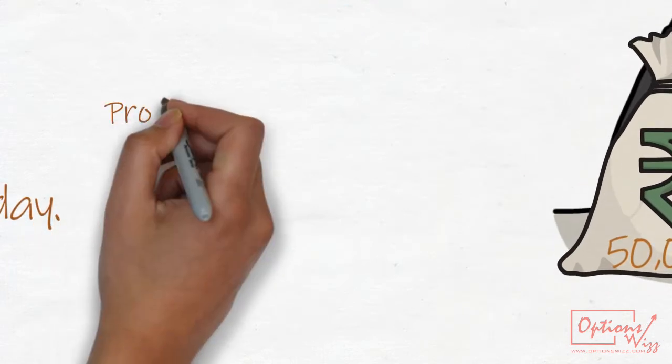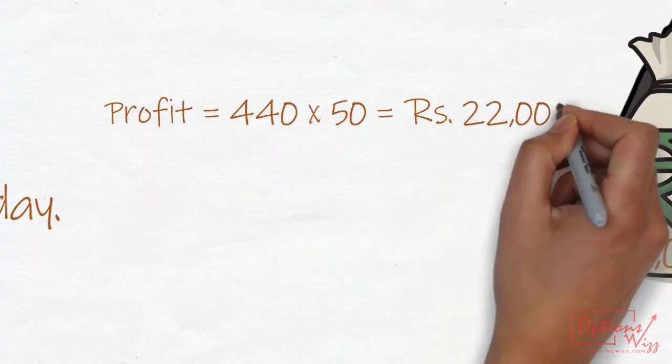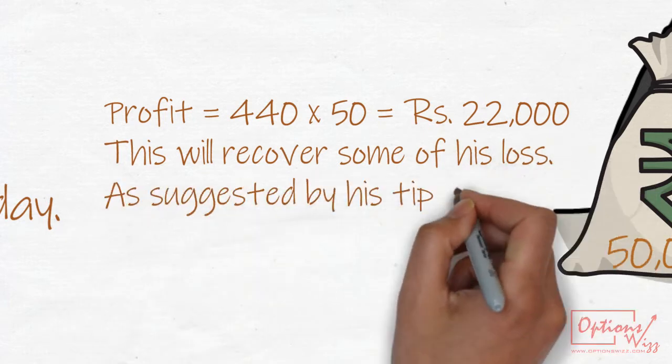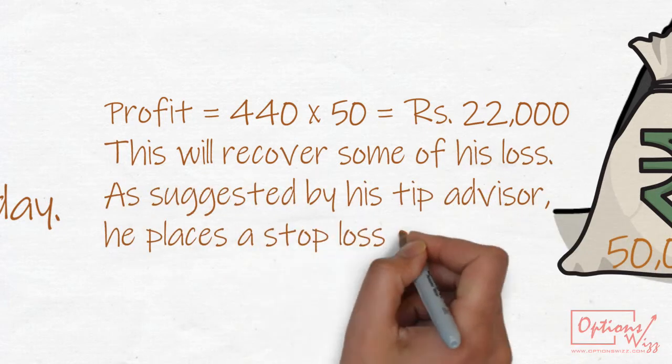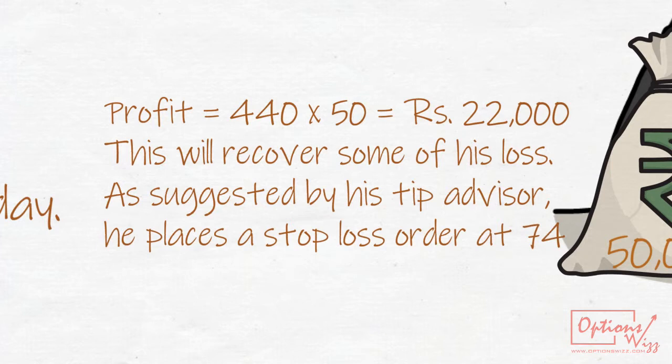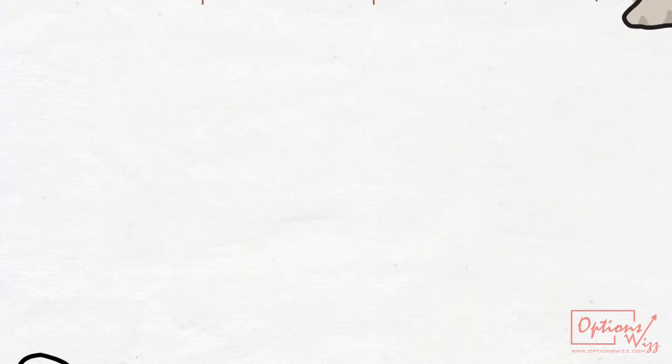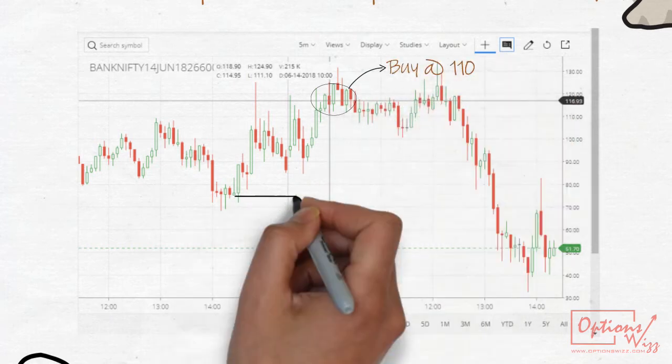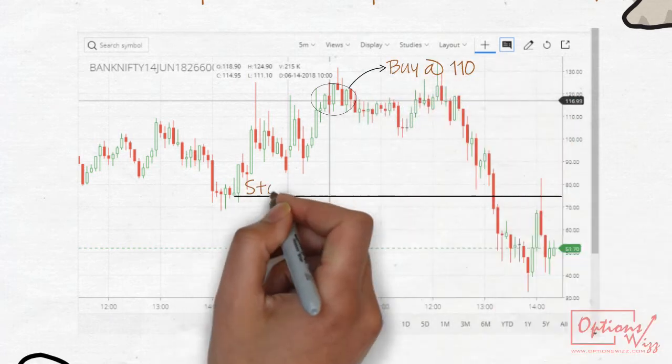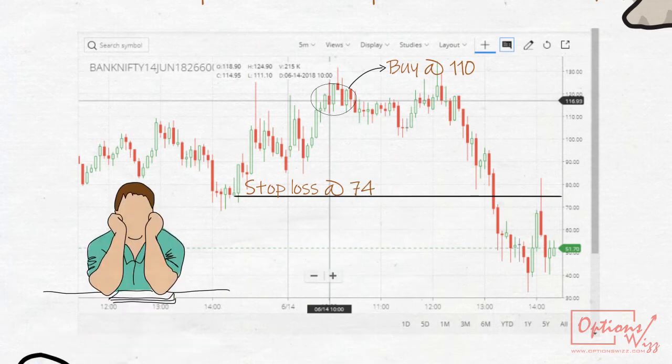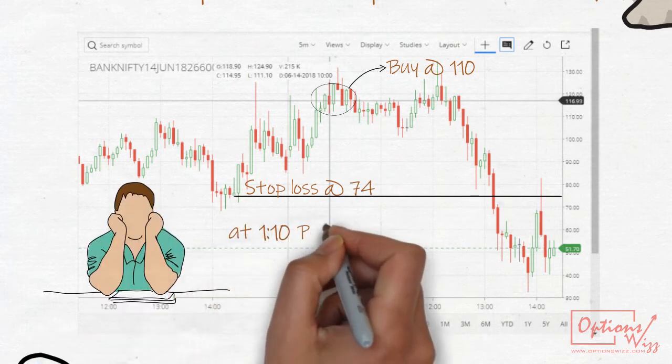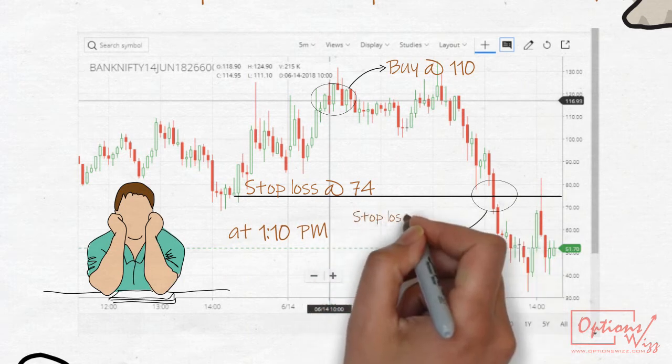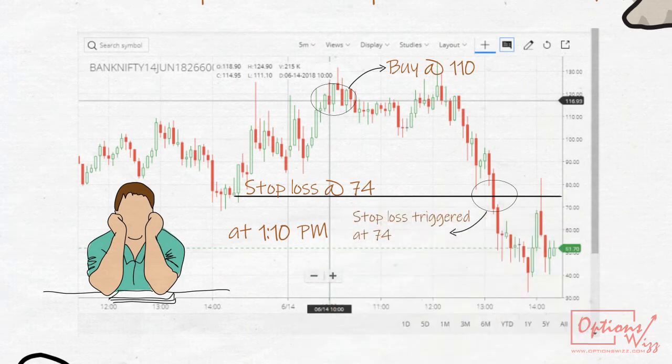How much profit will Raj earn on this trade? That is rupees 22,000. This will recover some of his losses. As suggested by his tip advisor, he places stop loss order at 74. Now he waits. At 1:10 PM his stop loss triggers and he books another 38 points loss, that is around rupees 16,000.